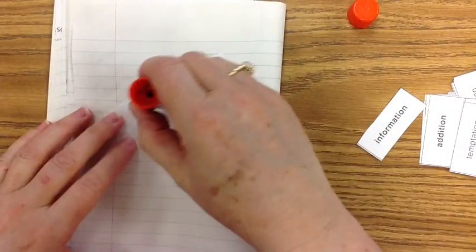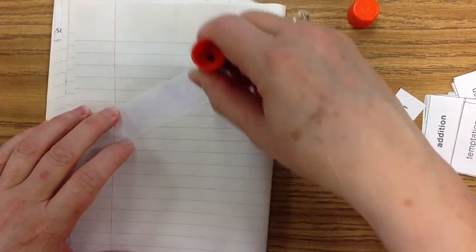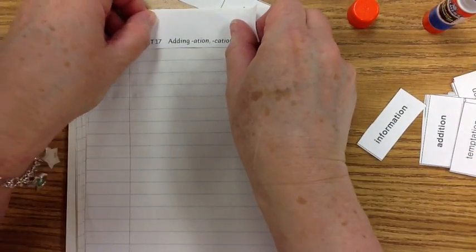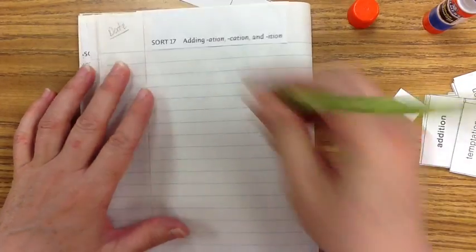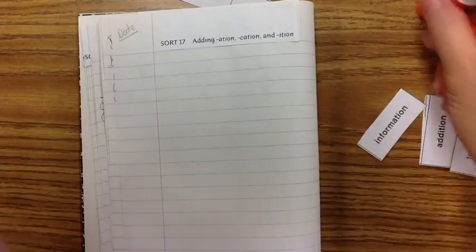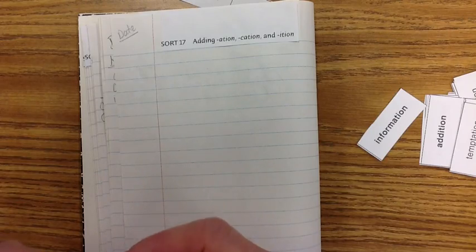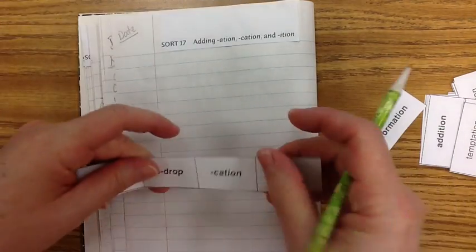Get the handy-dandy glue stick. Apply the glue. Make sure that you put the date on your page. Make sure you get your parent's signature also. Let's write our exemplars on here.